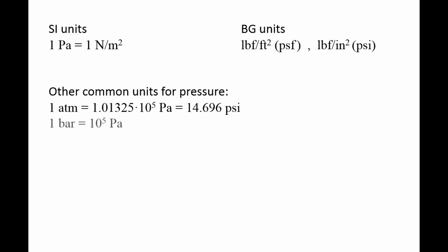One bar is equal to 100,000 Pascals, and both one Torr and one millimeter mercury are equal to 1 over 760 atmospheres.